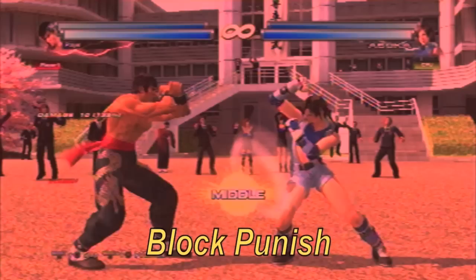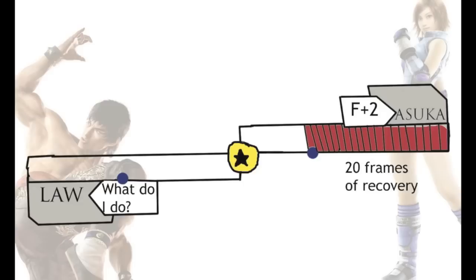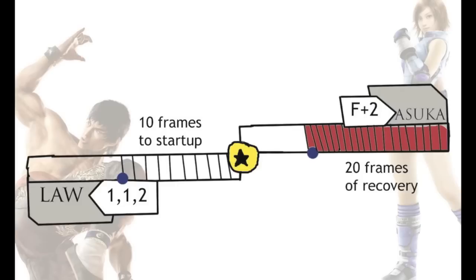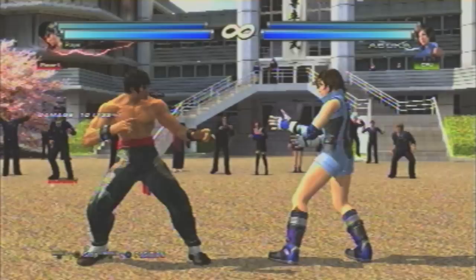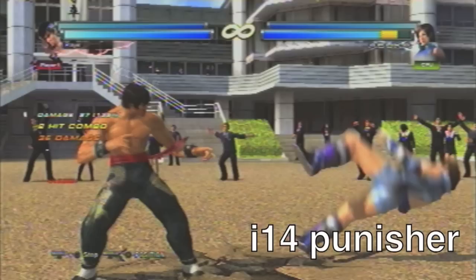The first situation is an example of a block punish. Asuka does her forward 2 which is blocked, putting her at negative 20, or 20 frames of recovery. In this recovery state, she is totally vulnerable and cannot block at all. Law can respond by getting guaranteed damage with a move that starts up faster than 20 frames. Using his 1-1-2 string, on the 10th frame Law has already reached its active state while Asuka still has 10 frames of recovery left, meaning she cannot block and has no choice but to receive damage. Because of these 10 frames of leeway, Law can go for more damage with slightly slower moves — as long as it's faster than 20 frames, it will be guaranteed.